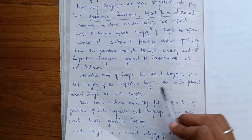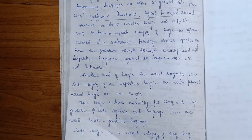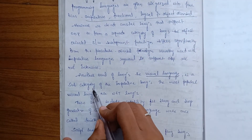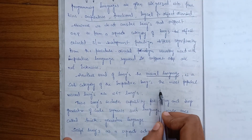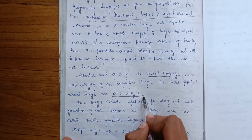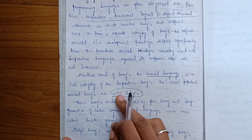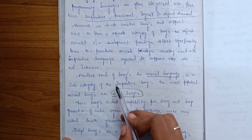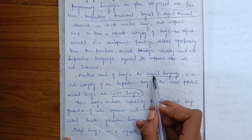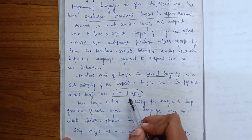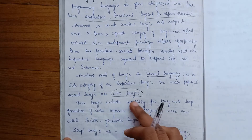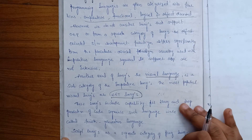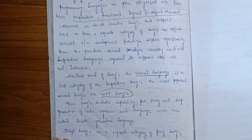Another kind of language is the visual language, which is a subcategory of the imperative language. The most popular visual language is the .NET language. This is a type of programming language similar to C and C++.